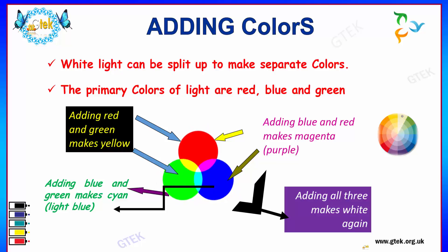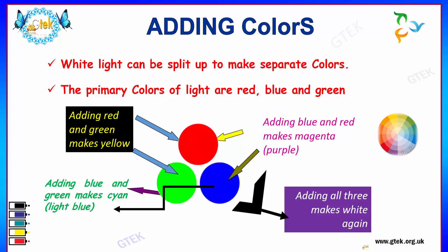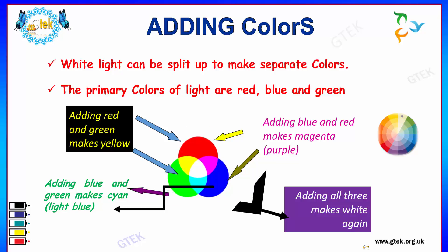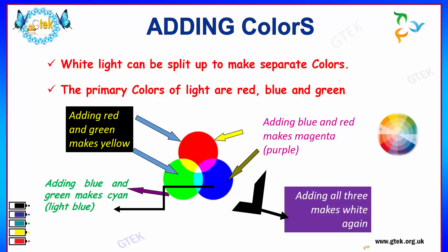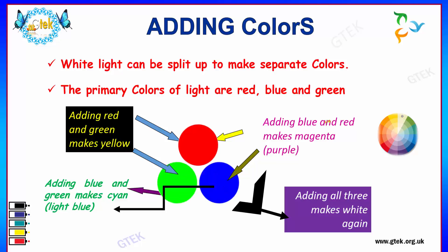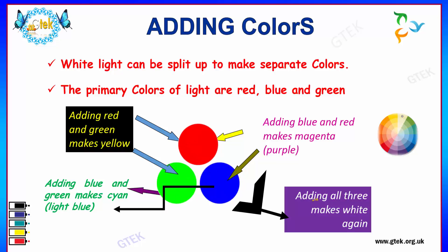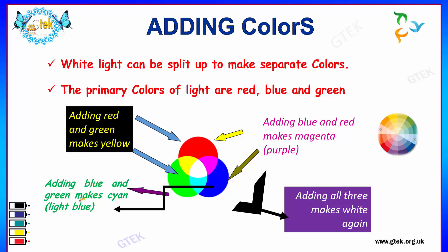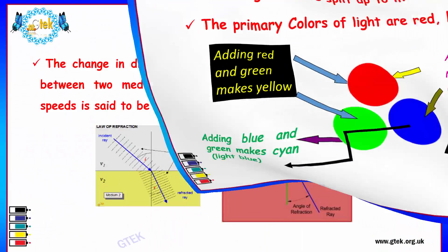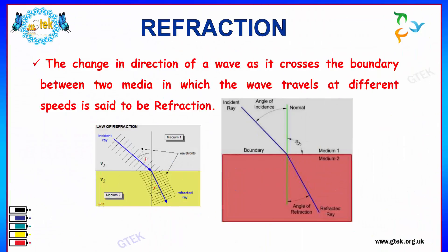If we consider adding of colors, white light can be split up to make separate colors. We already know the primary colors or RGB — red, blue and green. Adding red and green gives yellow. Blue and red makes magenta, that is purple. Adding all three colors together gives white in the middle. And adding blue and green makes cyan, which is a kind of light blue.